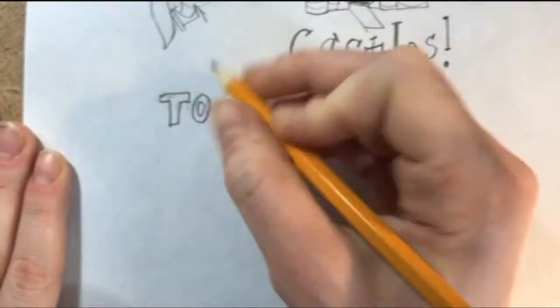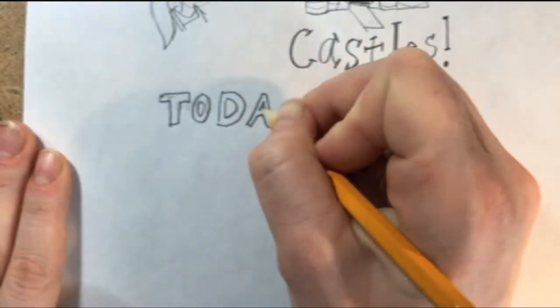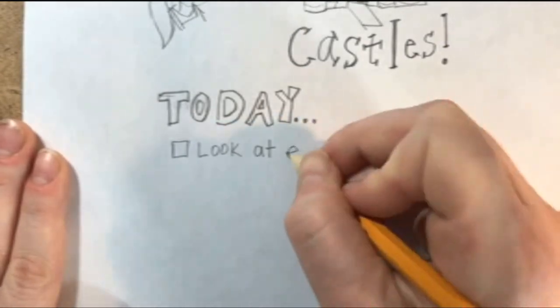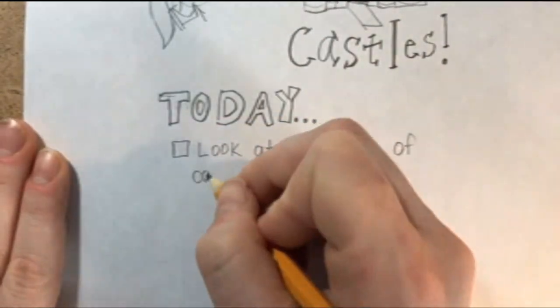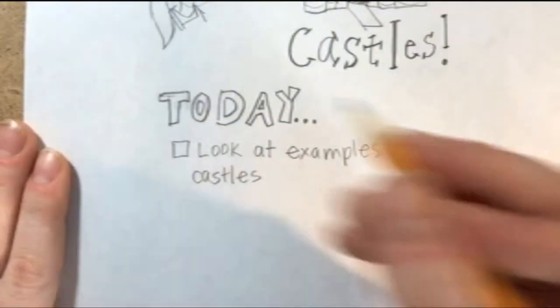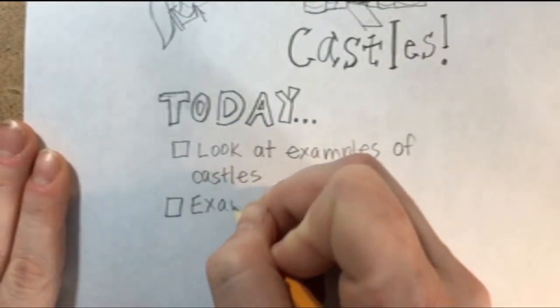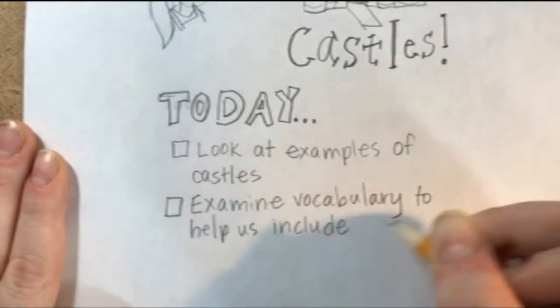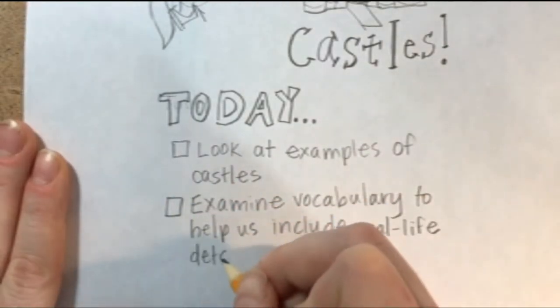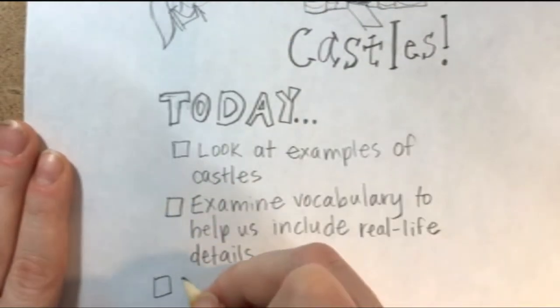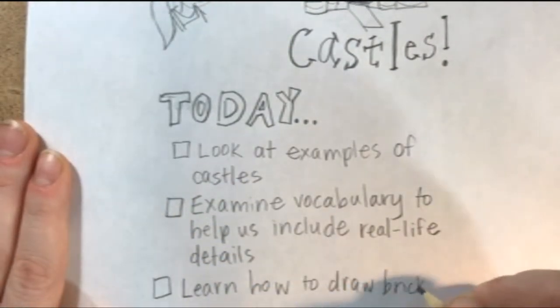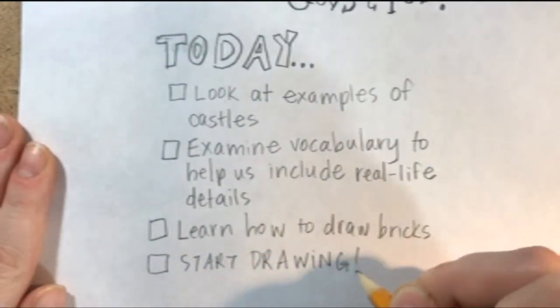So let's figure out what we need to do today to make sure our drawings look awesome. First, we're going to look at some examples of castles. Then we're going to examine vocabulary that's going to help us include real life details. Then we're going to learn how to draw bricks. And lastly, we're going to start drawing.